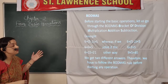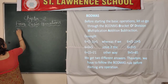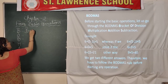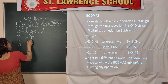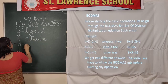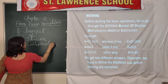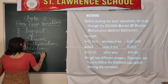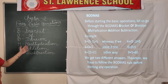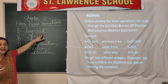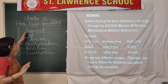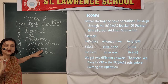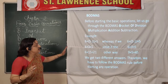Before starting the operations, first we will see the BODMAS rule. Now what is the BODMAS rule? BODMAS stands for Bracket, Division, Multiplication, Addition and Subtraction. According to the BODMAS rule, before starting any calculation, we have to start with the bracket first. After solving the bracket, we solve multiplication, then addition, and at last subtraction.